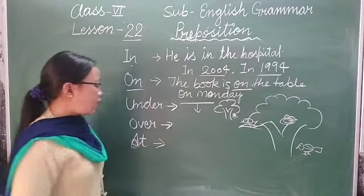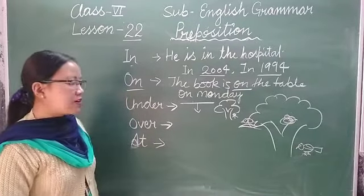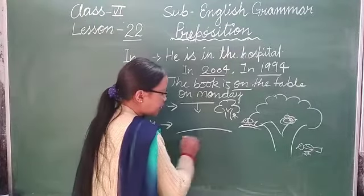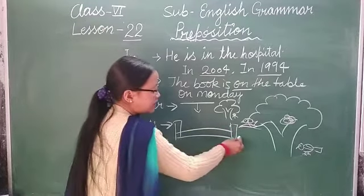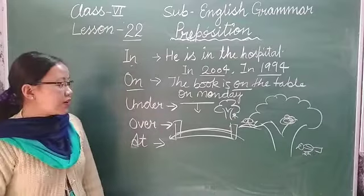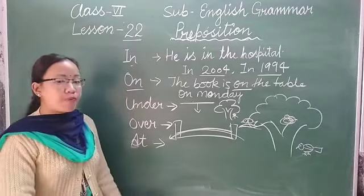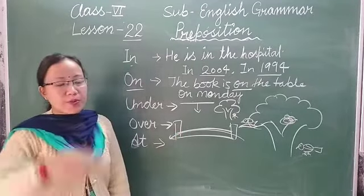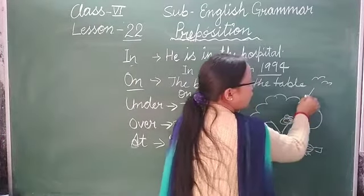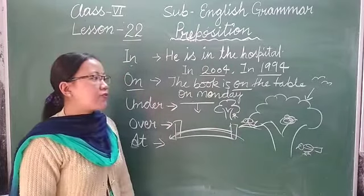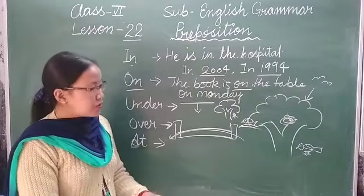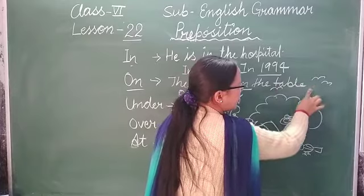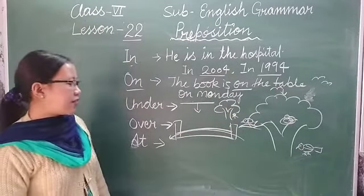Next is 'over', which means 'upar' (above/over). We use 'over' when something is passing above something else — like a bridge. If someone is crossing a bridge, we say 'He is going over the bridge.' Also: 'The birds are flying over the tree' — we use 'over' when something is directly above.